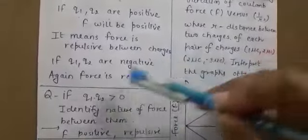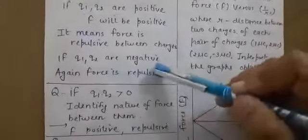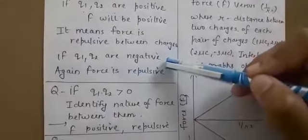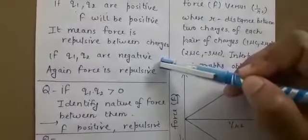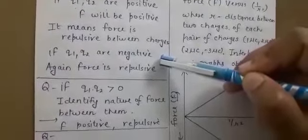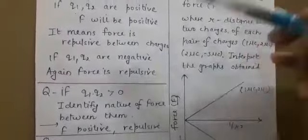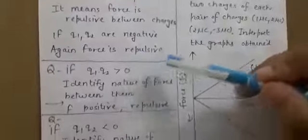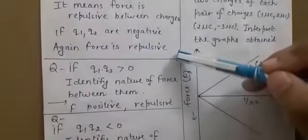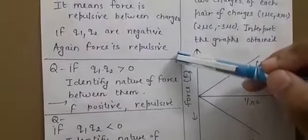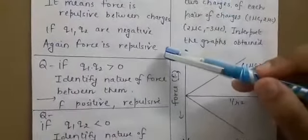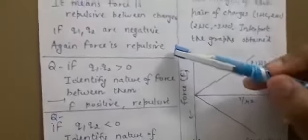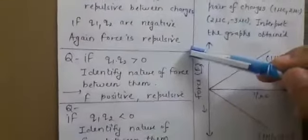Similarly, if Q1 and Q2 are both negative, again the product of negative charges gives a positive result, so the force will again be repulsive. So whether both charges are positive or both are negative, the force will always be repulsive.